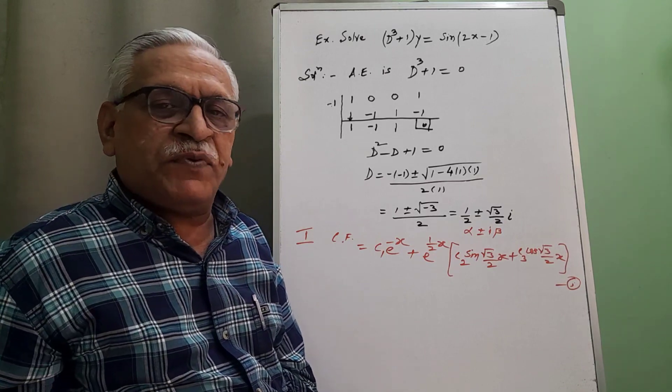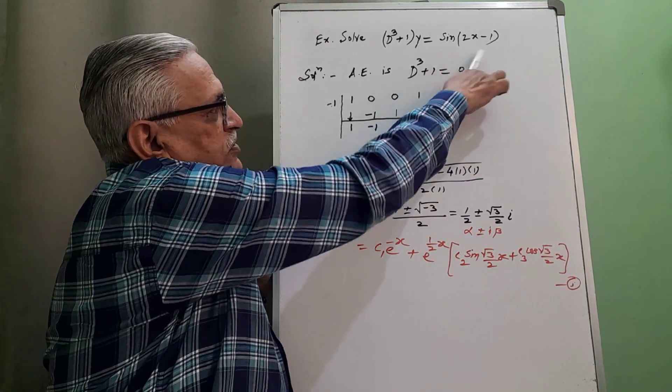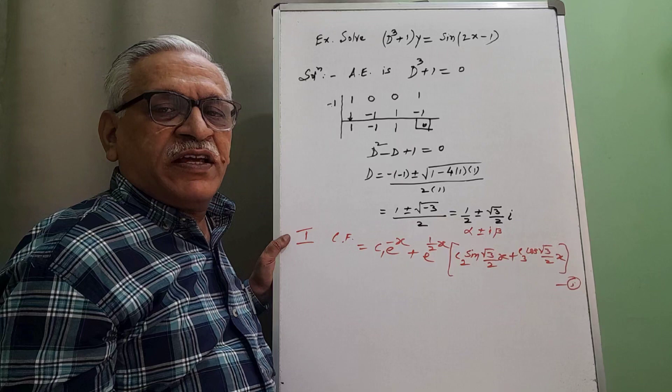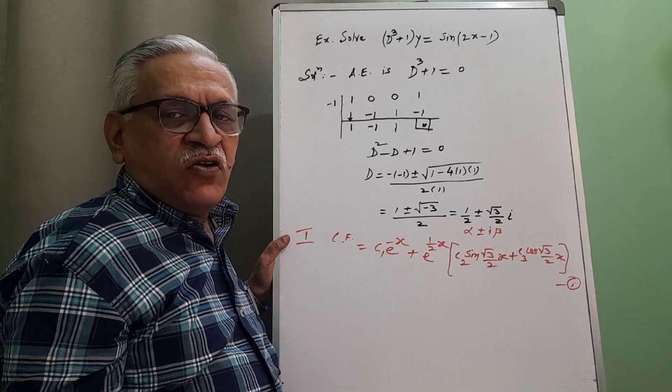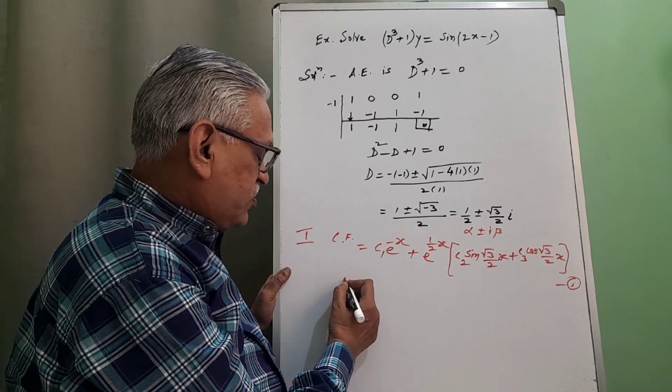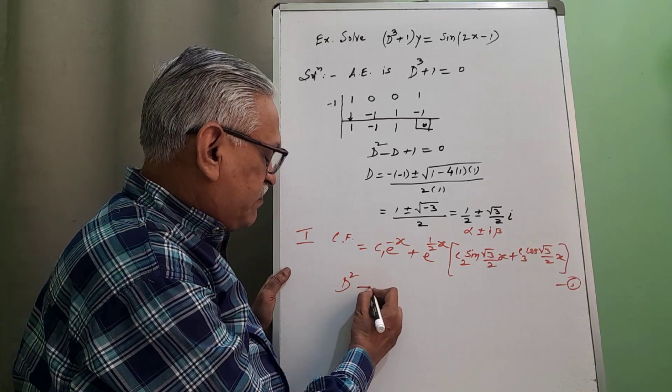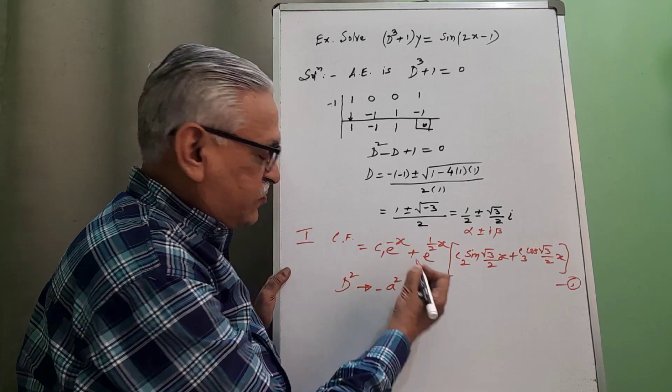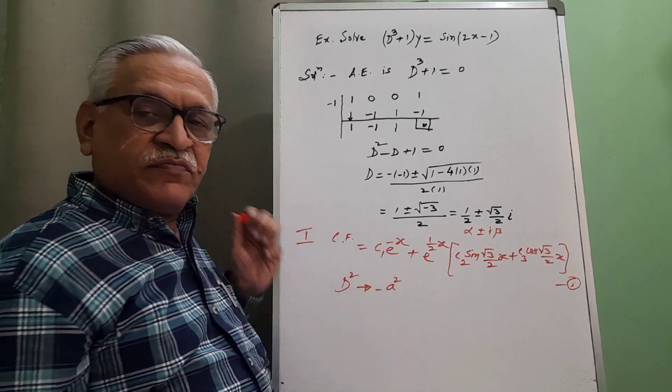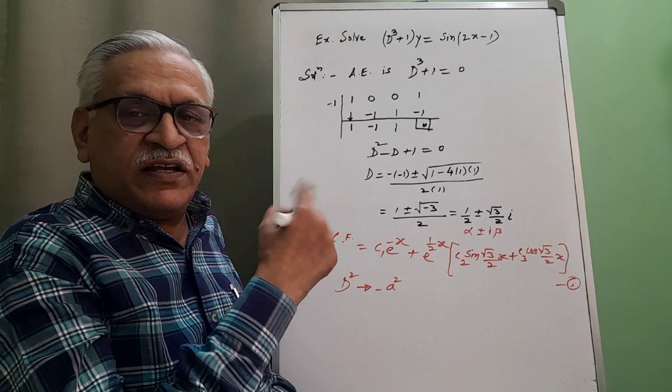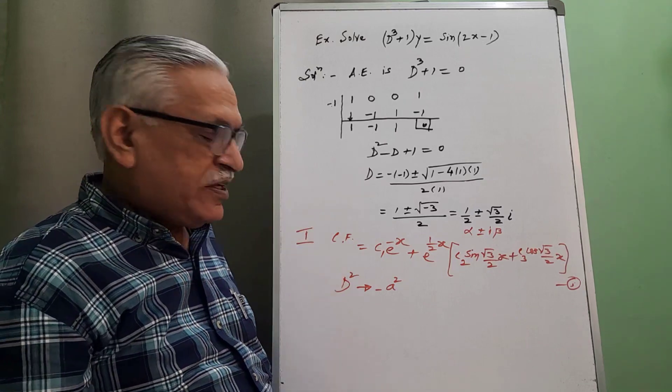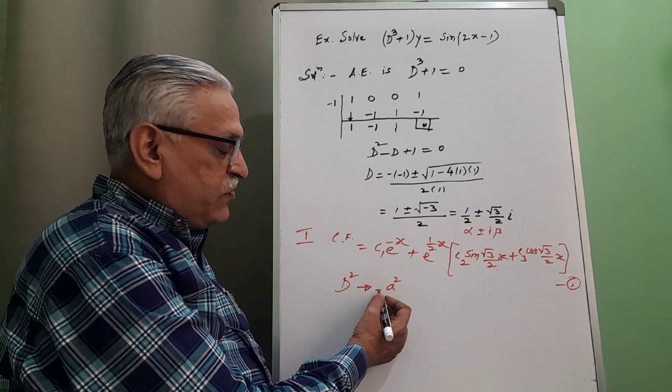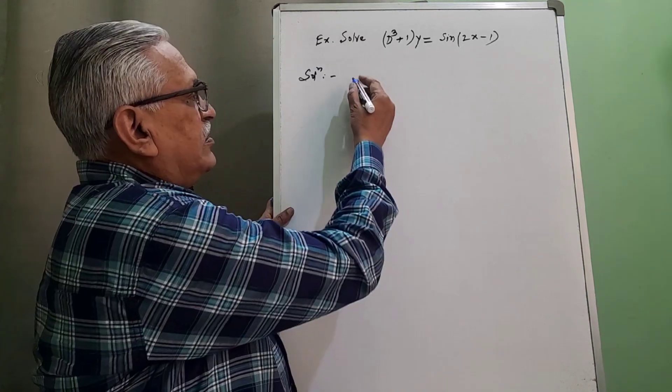We require to find out PI. And for that, if you observe the term on the right hand side, it is in the form of sin(ax + b) or cos(ax + b). For that, the rule is d square is replaced by minus a square. This is not minus a bracket square, be careful.